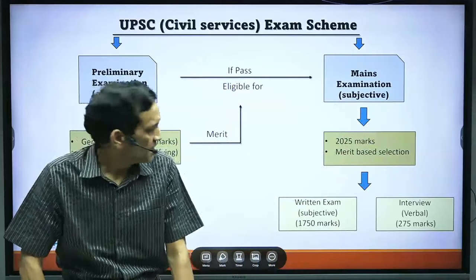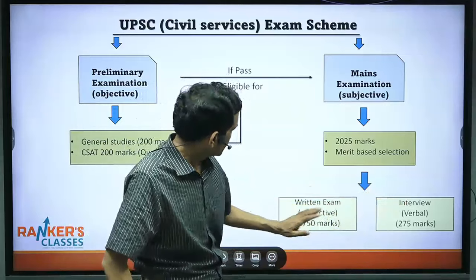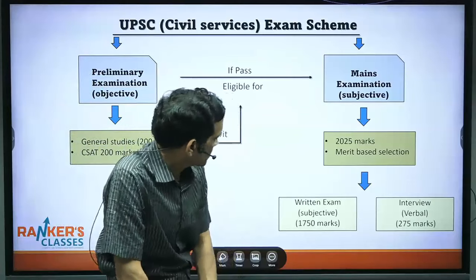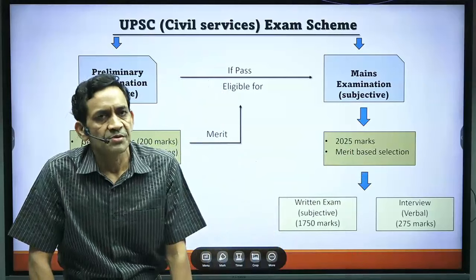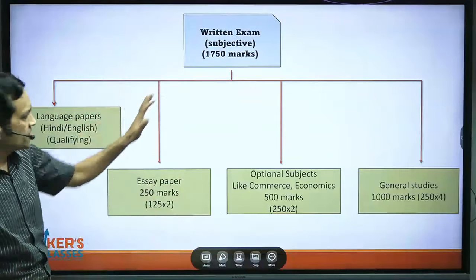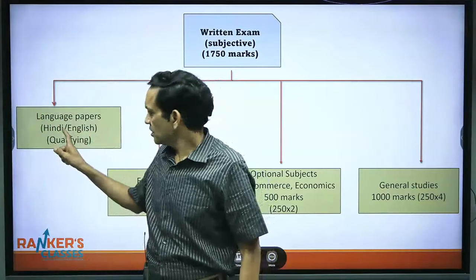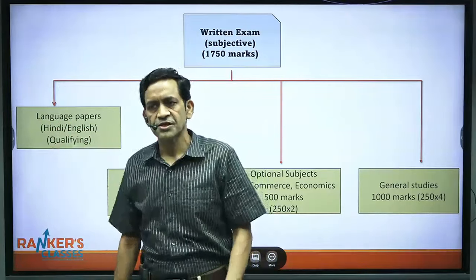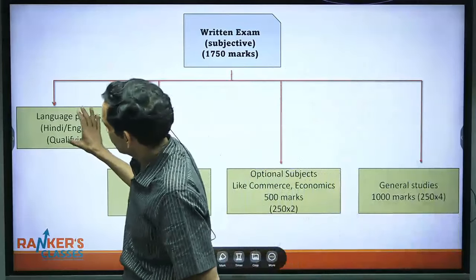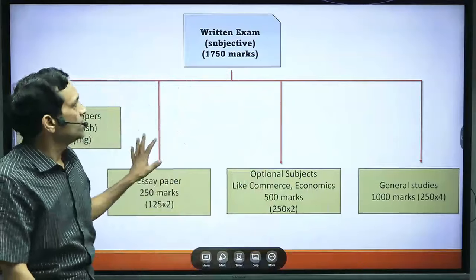The mains examination is what the merit is based on. The written examination is subjective and totals 1750 marks. First come the language papers — two language papers: English, which is compulsory, and a second language from the languages listed in the Constitution of India's schedule (e.g., Hindi, Uriya, Punjabi, etc.). These are qualifying in nature — only after clearing them are your other papers checked.